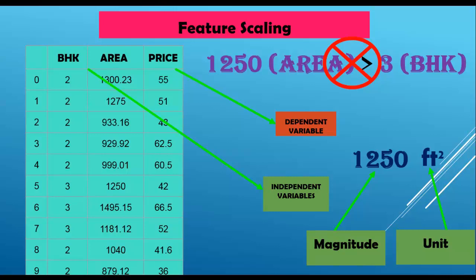Feature scaling is essential for machine learning algorithms that calculate distances between data. If features are not scaled, features with a higher value range start dominating when calculating distances. The machine learning algorithms that require feature scaling are mostly K-nearest neighbor, neural networks, support vector machines, principal component analysis, linear regression, and logistic regression. Algorithms that do not require feature scaling are mostly non-linear algorithms like decision tree and random forest. Any algorithm that is not distance-based is not affected by feature scaling.